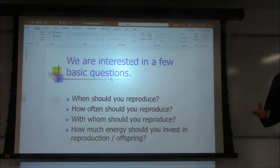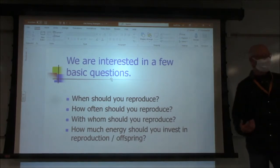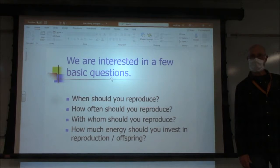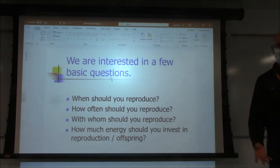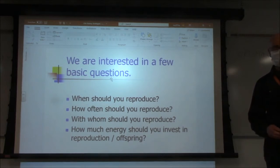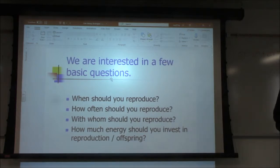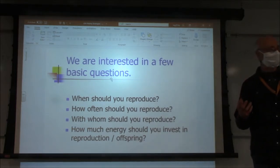You could also increase the price of your burgers, but at some point people stop showing up. You can pay employees less, but at some point the only employees working for you are worthless or so disgruntled they start stealing food. So we're trying to optimize. What are we trying to optimize when talking about reproduction?